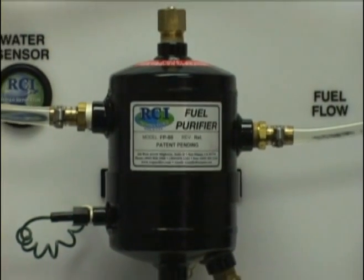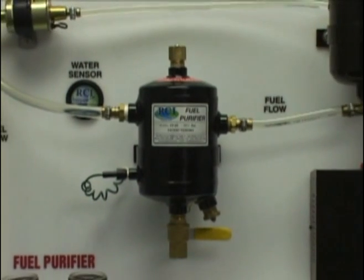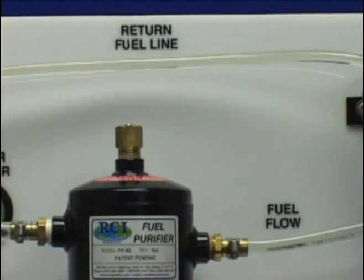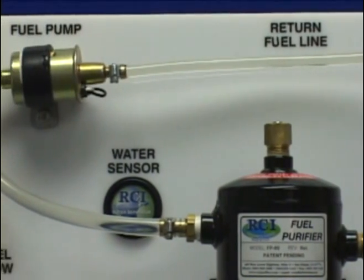Here we have a standard fuel system with a fuel supply, an RCI Technologies fuel purifier, and a small fuel pump to give it circulation. There is less than one gallon of fuel in this entire system.